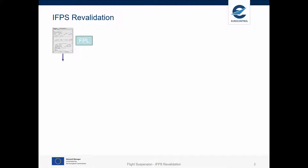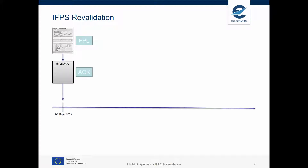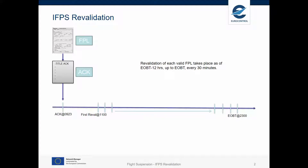Once a flight plan has been acknowledged, it will be revalidated by IFPS. IFPS revalidation occurs from EOBT minus 12 hours up to EOBT every 30 minutes. For this flight, that has an EOBT at 2300, the first revalidation will take place at 1100.